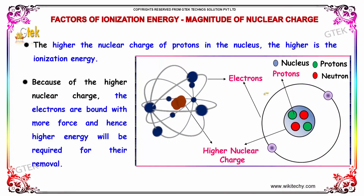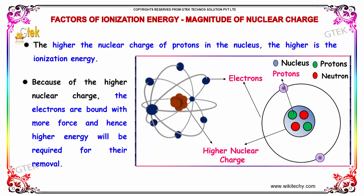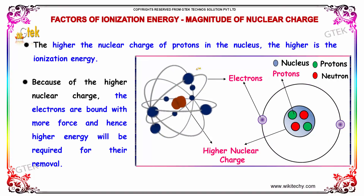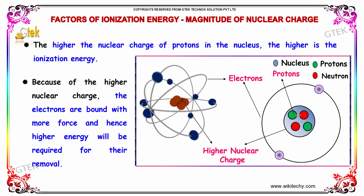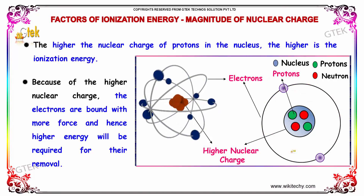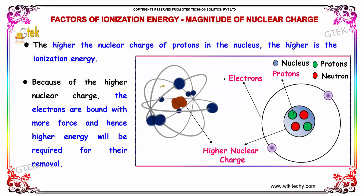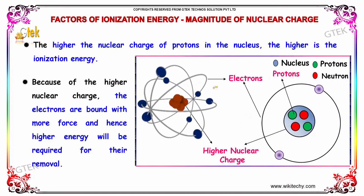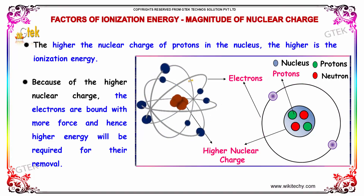The next factor is the magnitude of nuclear charge. The higher the nuclear charge, meaning the number of protons in the nucleus, the higher is the ionization energy. Because of the higher nuclear charge, the electrons are bound with more force and hence higher energy will be required for their removal.